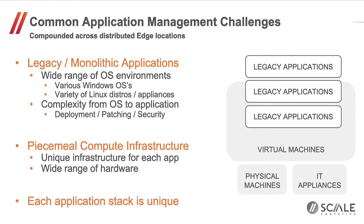Moving into applications: some of the common application management challenges get compounded across many distributed edge locations. Legacy and monolithic applications are a big one — even modern applications often have dependencies on legacy systems. Gas station forecourt controllers, for example, are very dependent on old Windows technology and hardware that was deployed many years ago and won't be touched for a long time. Running a wide range of OS environments — various Linux distributions and virtual appliances — adds complexity around deployment, patching, security, backup, and restore.